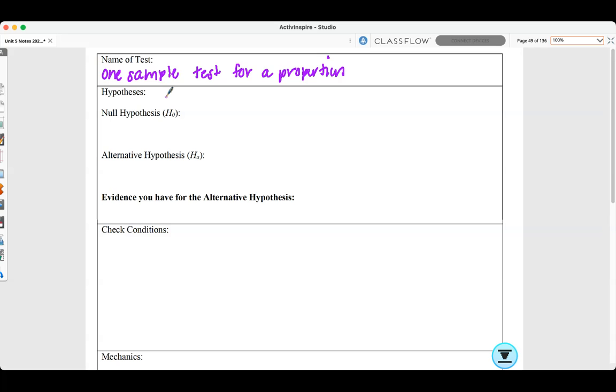We need to state our null hypothesis and alternative hypothesis. However, first, we need to state the proportion, P, our parameter. And it's the proportion of PHS students who have never smoked a cigarette. Our null hypothesis is P equals 0.5 because the CDC says 50% of students have smoked a cigarette. Our alternative hypothesis is P doesn't equal 0.5, because we don't think that 50% of the students at Poolsville High School have never smoked a cigarette.